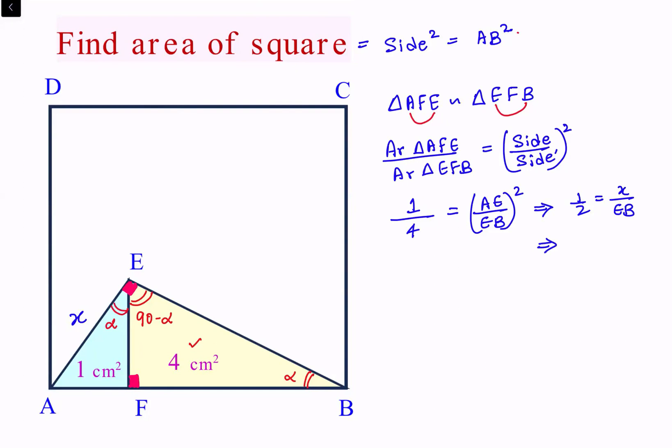Now using the fact that angle E is 90 degrees in triangle ABE, we can apply Pythagoras theorem. So we will say that AB squared...